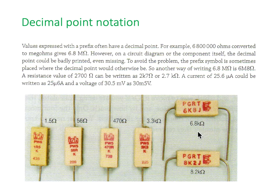Now, decimal points when labeling resistance and using them in circuit diagrams is pretty important. Values expressed with prefixes often have a decimal point. For example, 6,800,000 ohms converted to mega ohms is 6.8 mega ohms. However, on a circuit diagram or the component itself, the decimal point could be badly printed or even missing. To avoid this dilemma, the prefix symbol is sometimes placed where the decimal point would otherwise be. So another way of writing 6.8 is to write 6M8 omega, in other words 6.8 mega ohms.